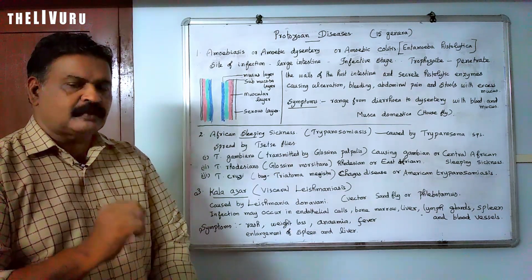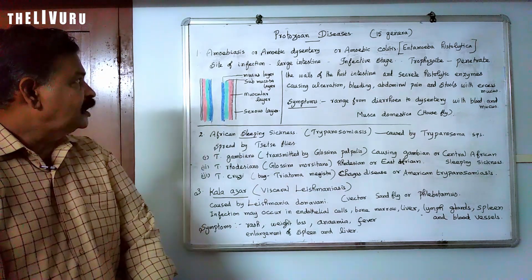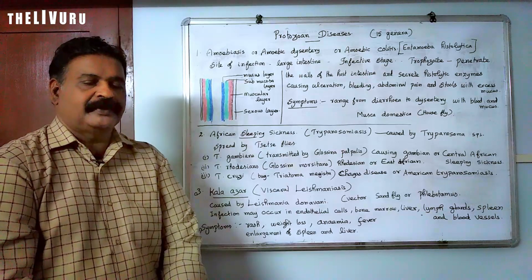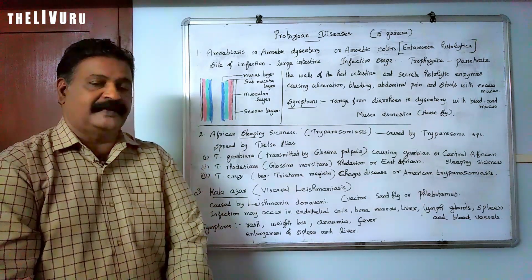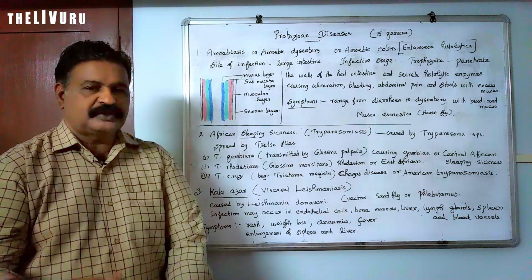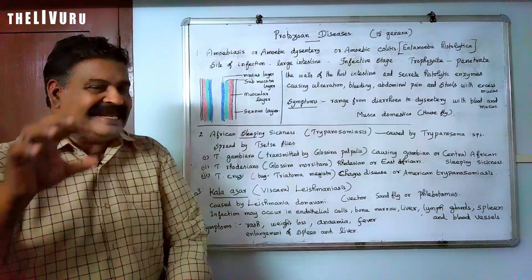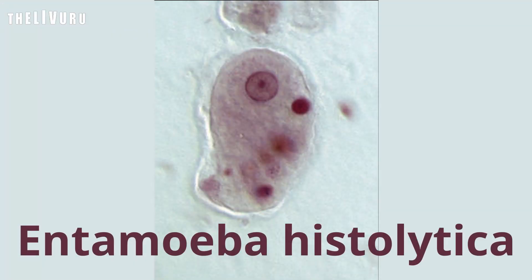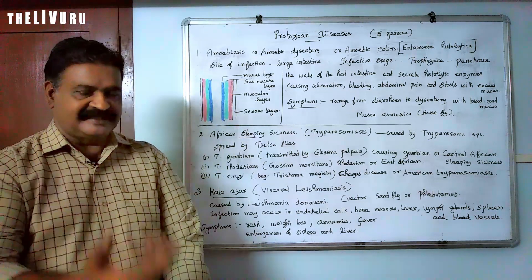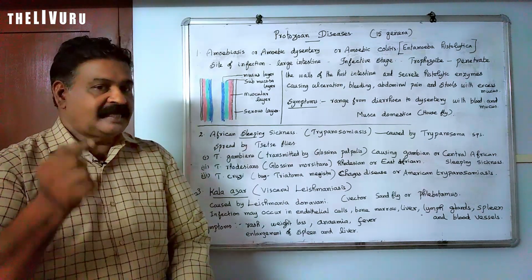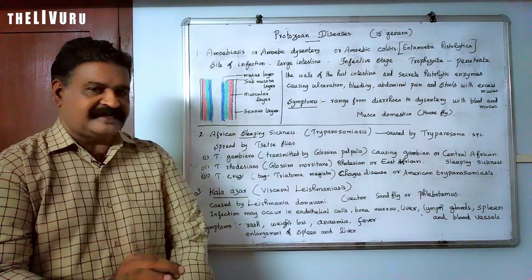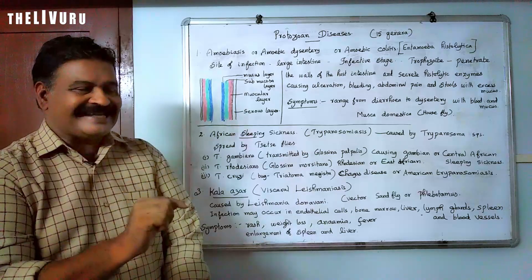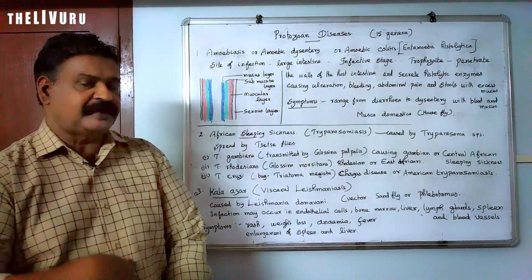Entamoeba histolytica lives inside our colon. In its life cycle there are various stages. One important stage is the trophozoite, which is the first active stage of the organism within the colon.